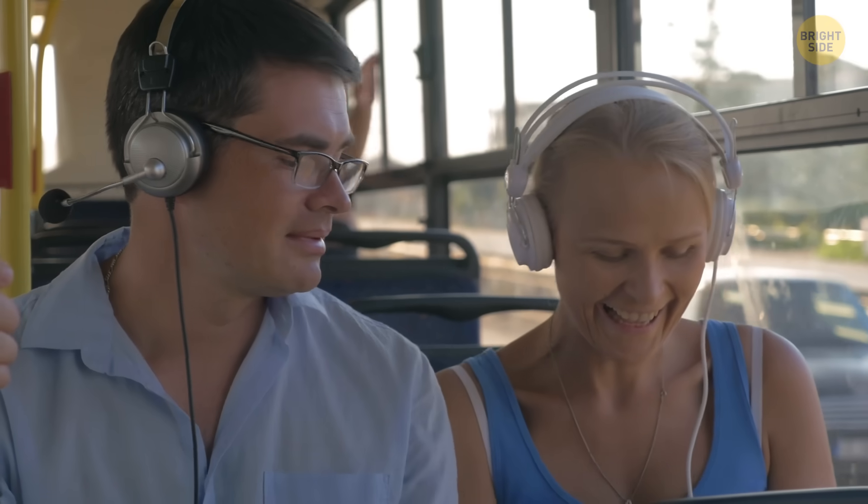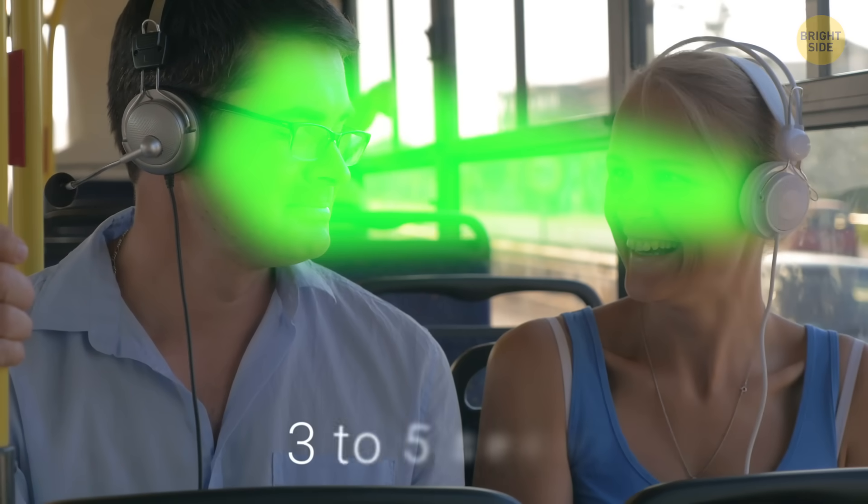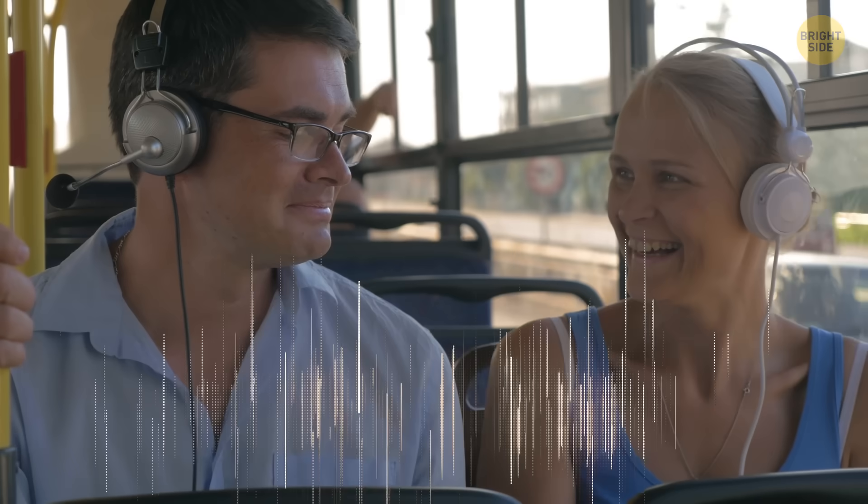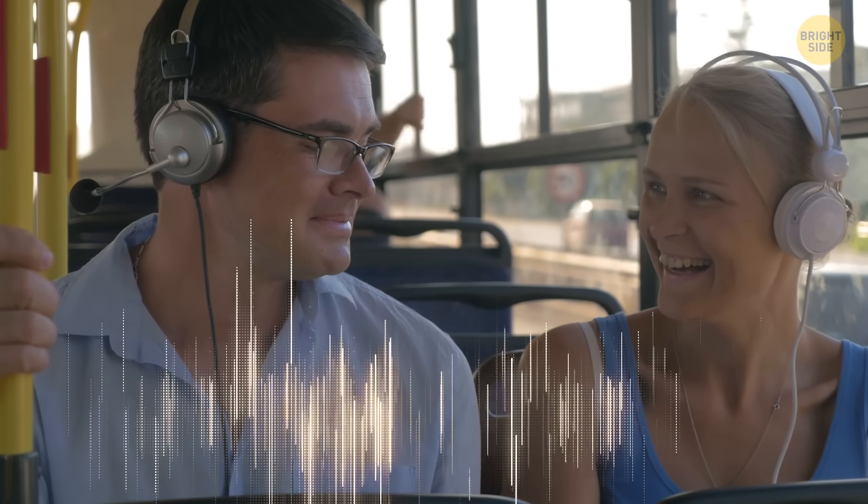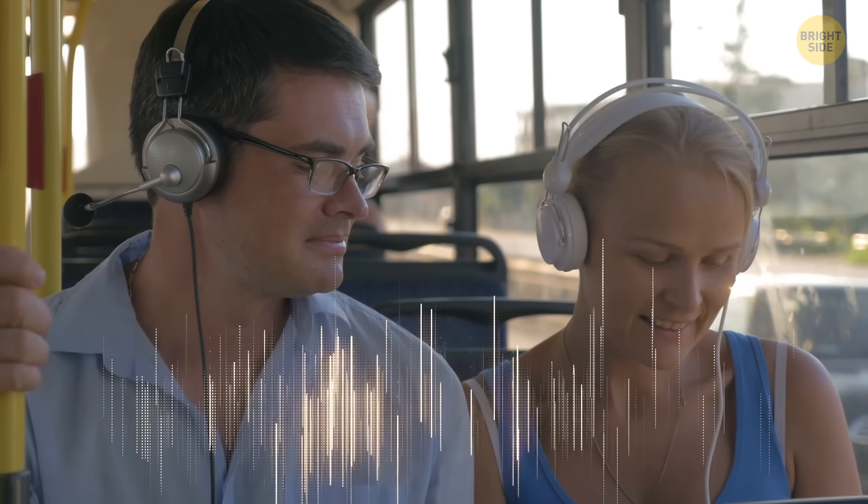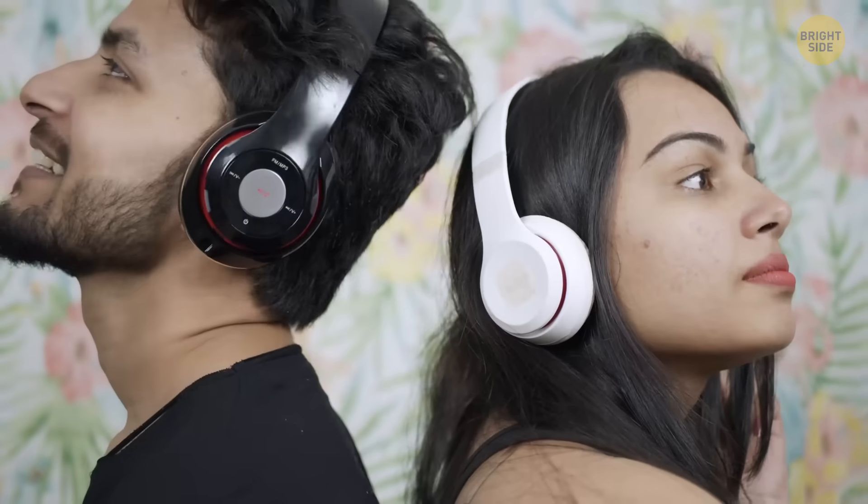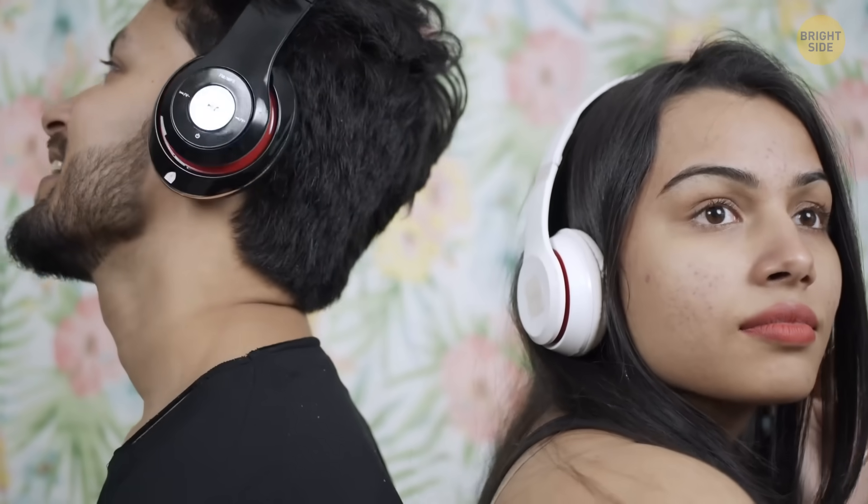You just look at the person you want to hear for about 3-5 seconds, and the headphones will lock on to their voice. After that, the headphones block out all the other sounds around you and play only that person's voice in real time. And even if you're in a loud place or you walk around and aren't facing them anymore, it still works.